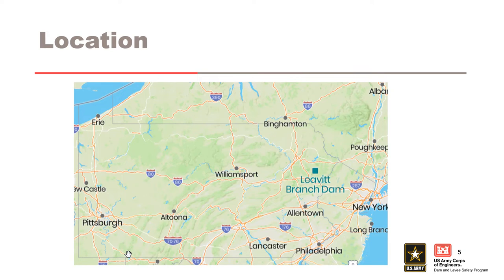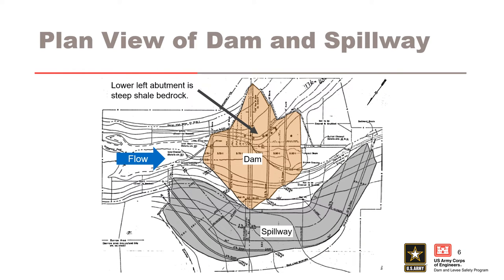The U.S. Soil Conservation Service, now known as the NRCS, Dam PA-463, is Broadhead Dam, also known as Levitt Branch Dam, located in north central Pennsylvania in Monroe County. The project is a dry dam and helps regulate the flow from Levitt Branch, one of the headwaters of Broadhead Creek, and impounds approximately 1,544 acre-feet of water.